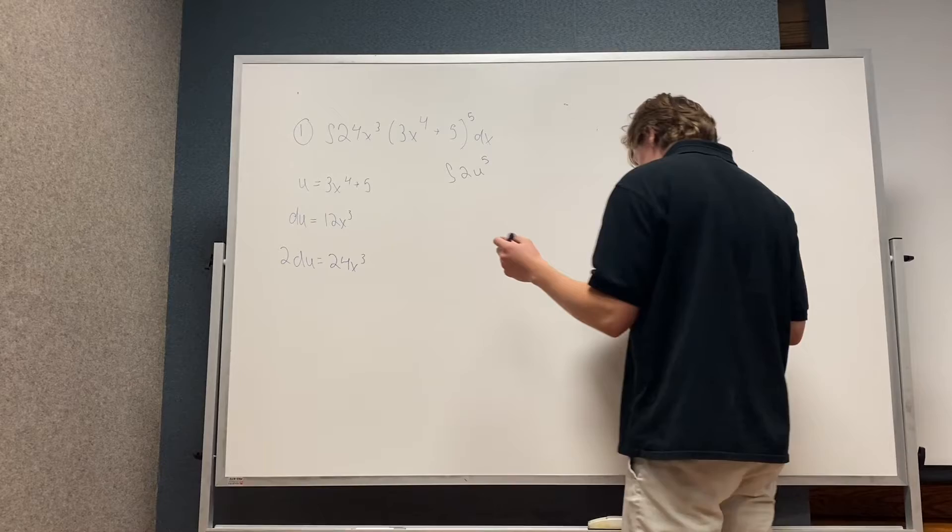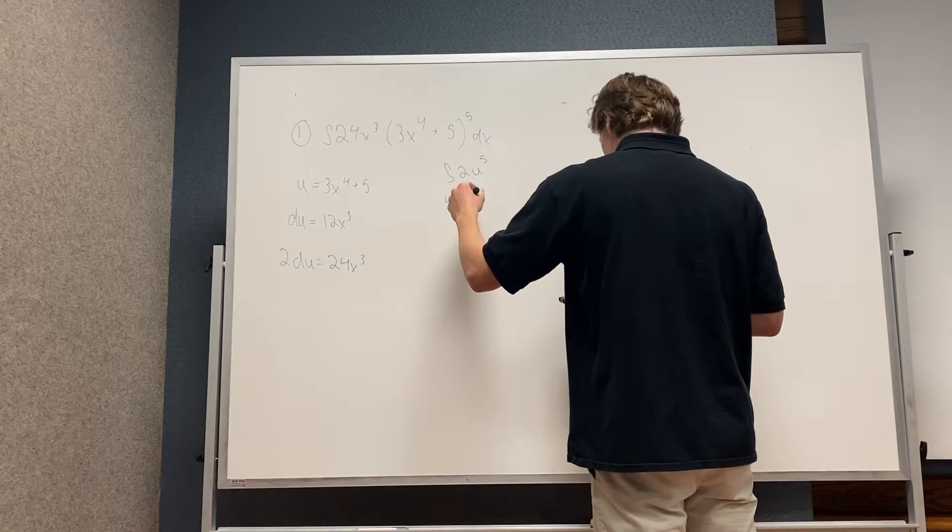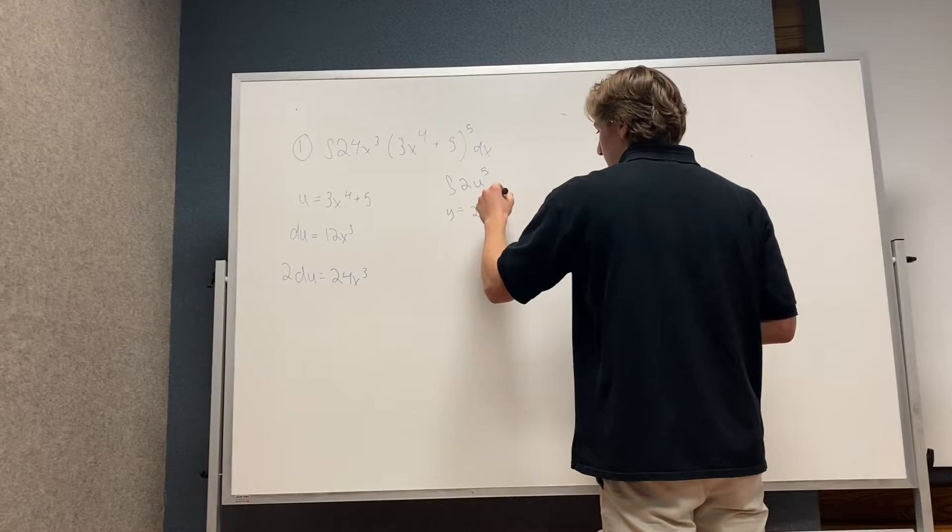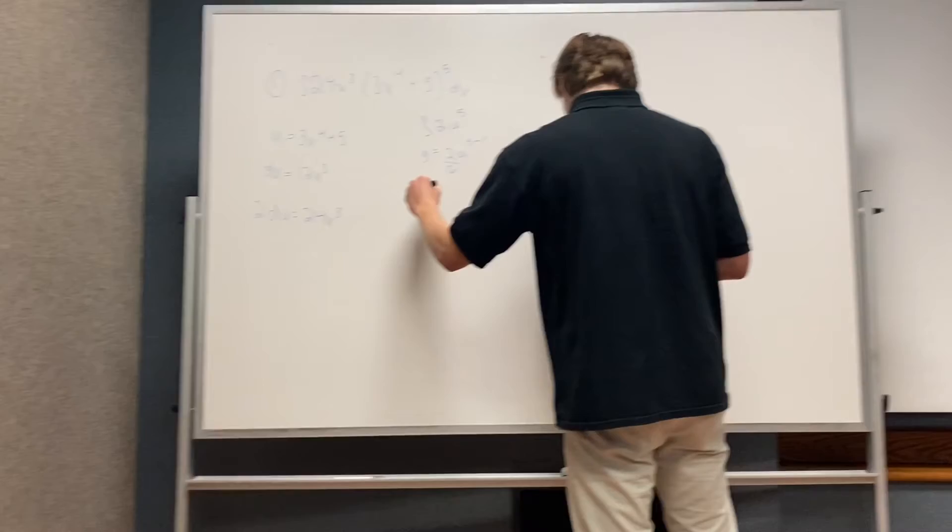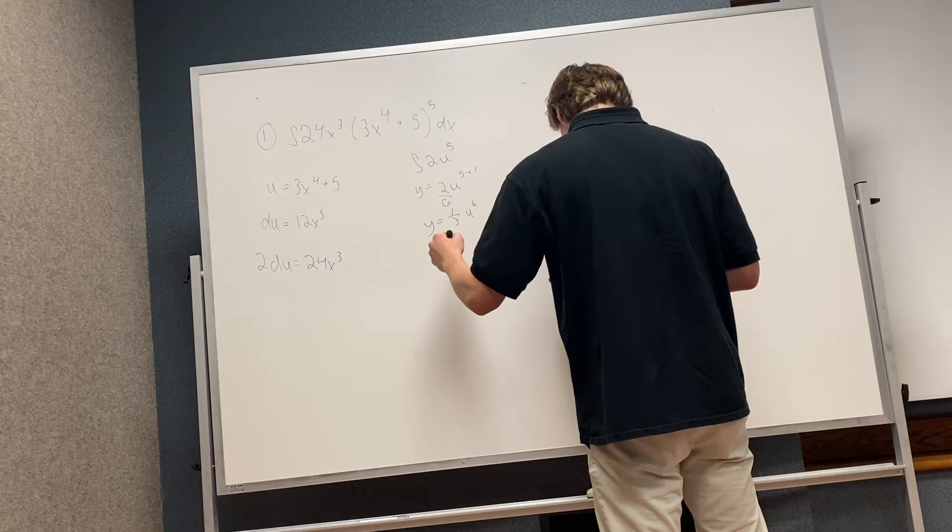And then it will be y equals 2u to the 5th plus 1, and then you have 6 here, so divide by 6, and then it will be y equals 1 third u to the 6th plus c.